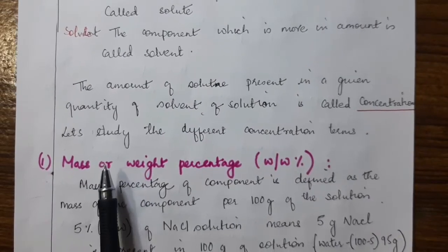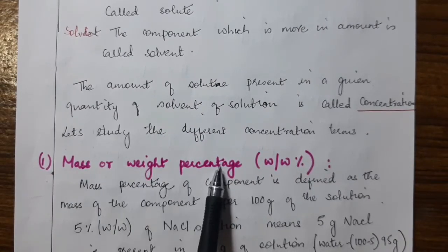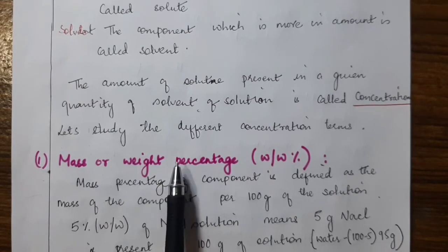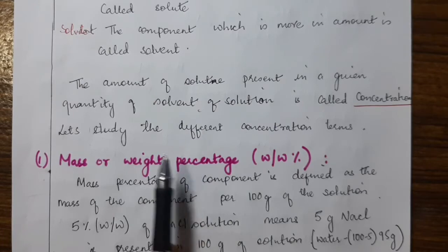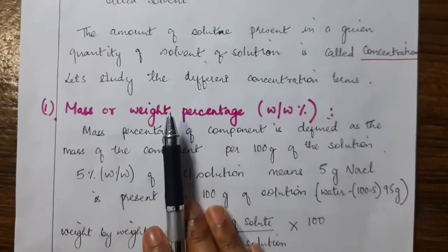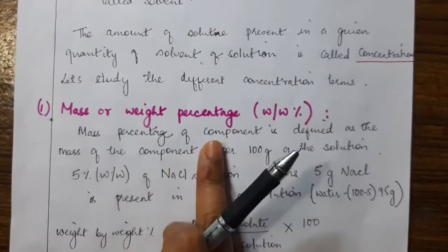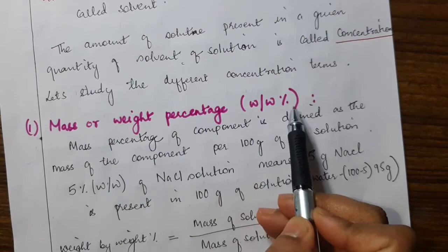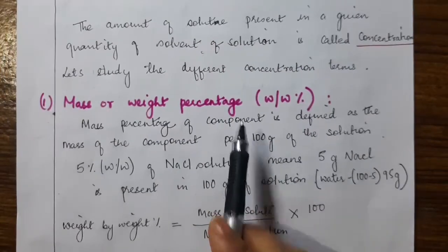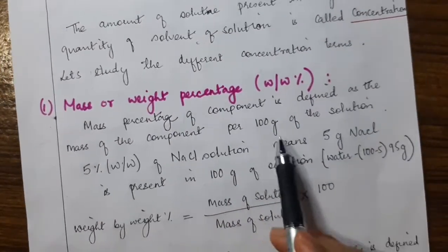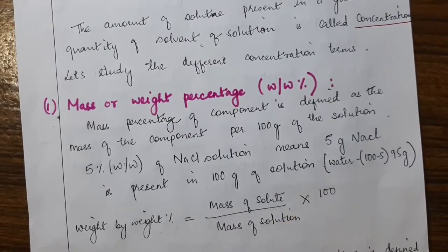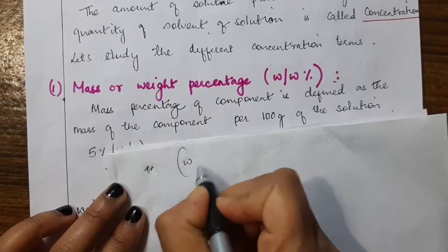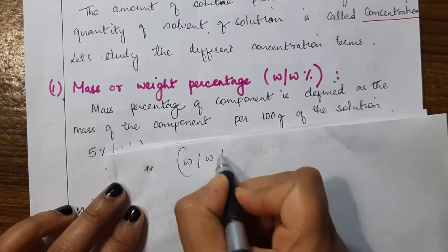The first concentration term is mass percentage, also called weight percentage, written as W/W%. In chemistry, mass and weight mean the same thing. Mass percentage of a component is defined as the mass of the component per 100 grams of the solution.